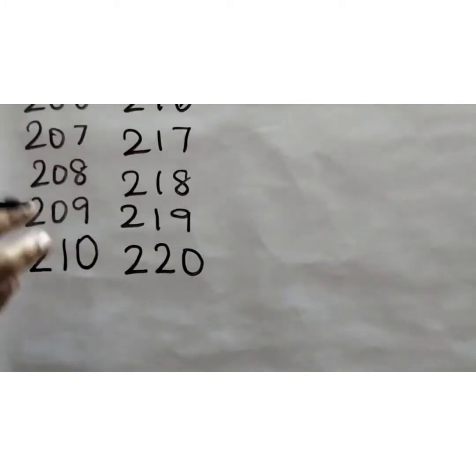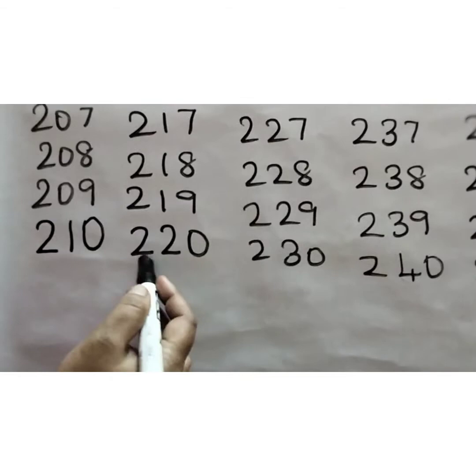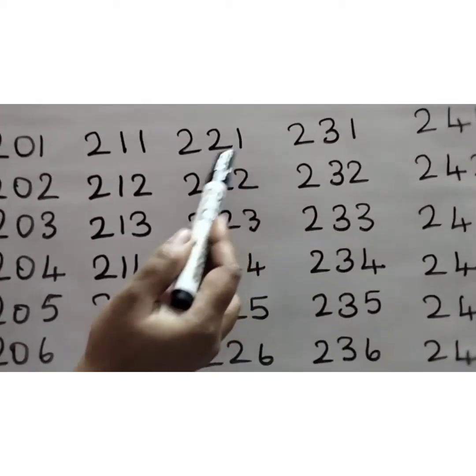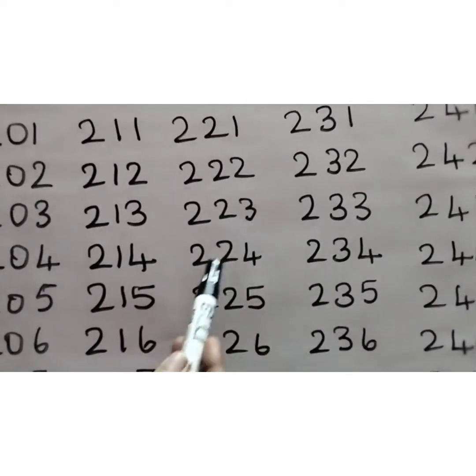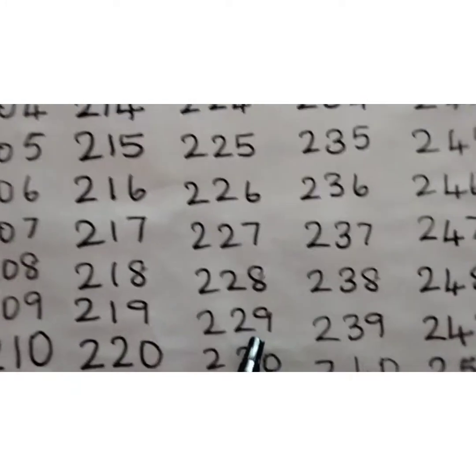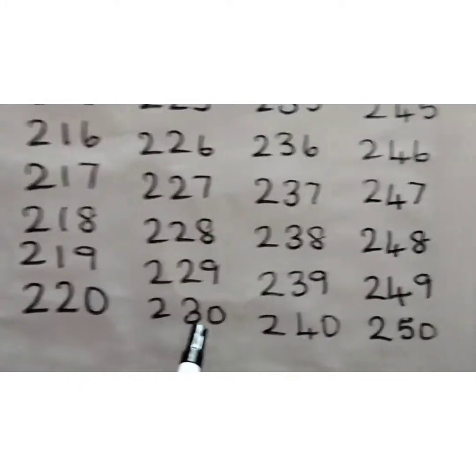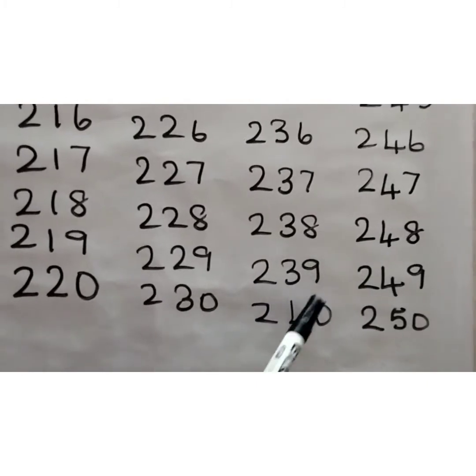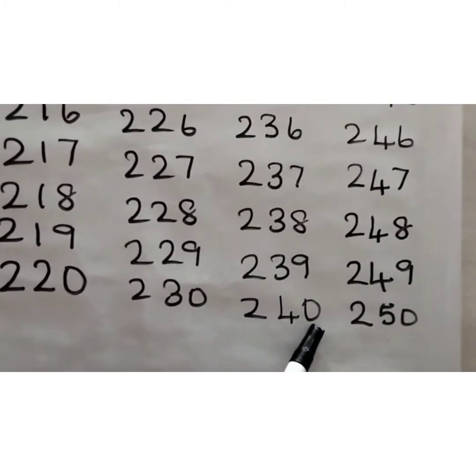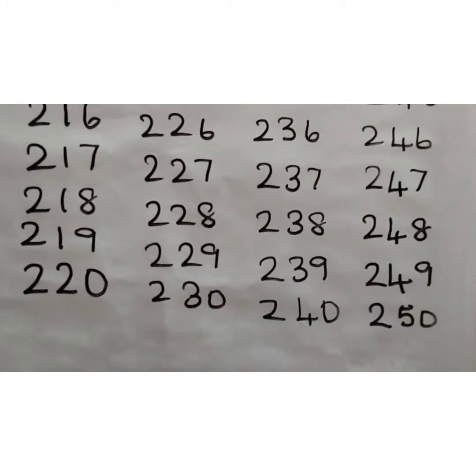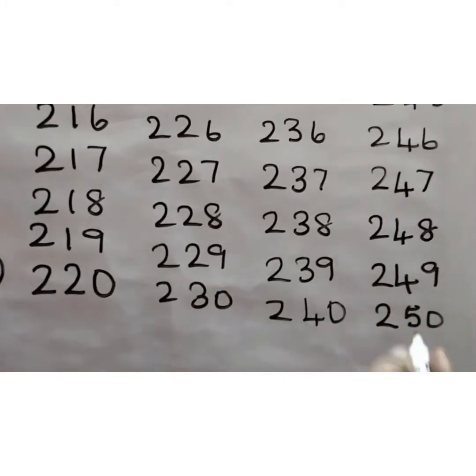So likewise we have to write till 250. See, after this 220, we have to write 221, 222, 223, 224, 225. Like this you write. After this 229, it is 230. See here after this 239, it is 240. 249, it is 250. So copy this in your classwork children.